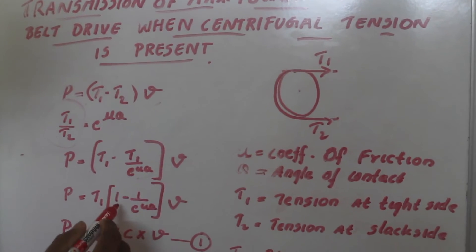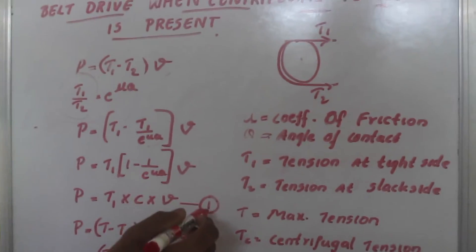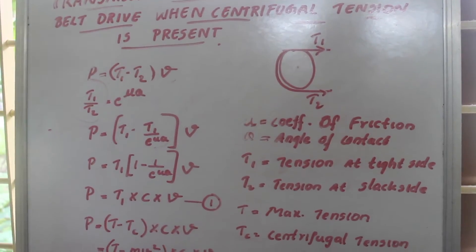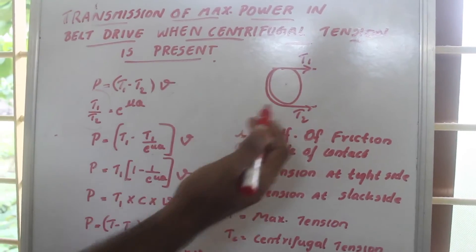We can take this (1 minus 1 by e raised to μθ) as a constant c. If we take this equation as equation 1, then we know that when centrifugal tension is present, the maximum tension is T.